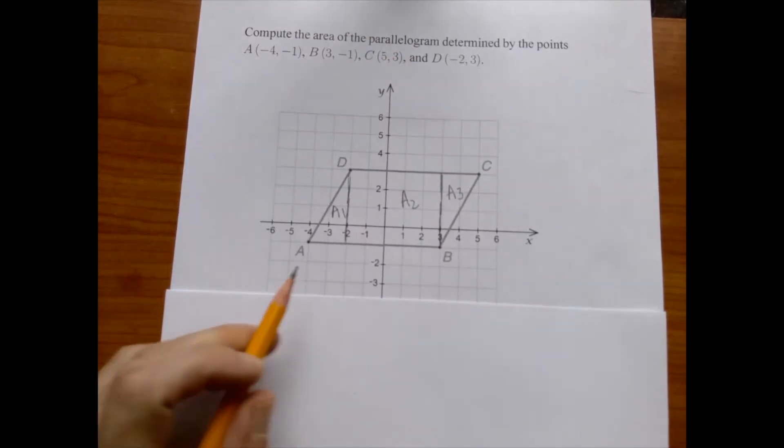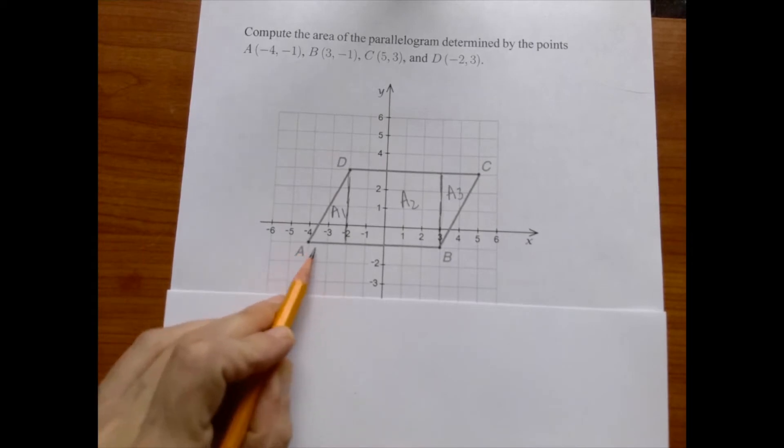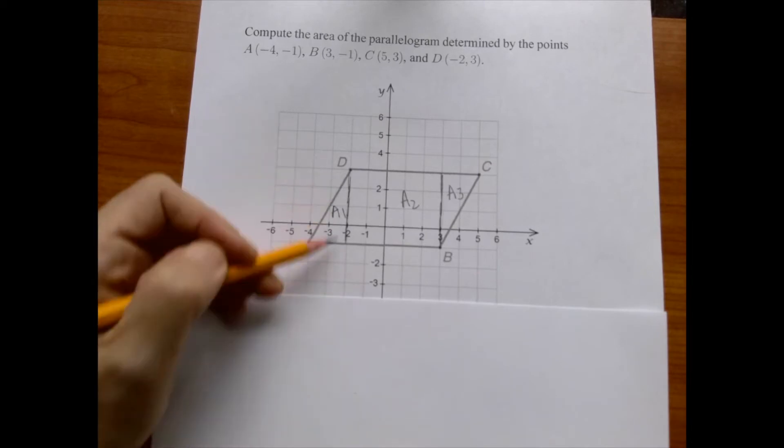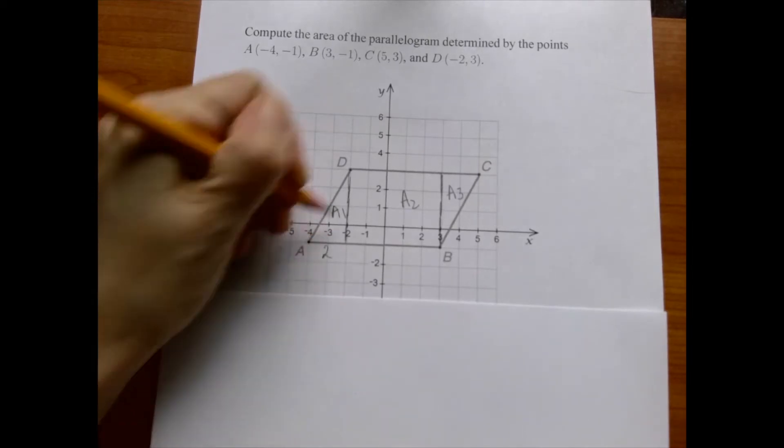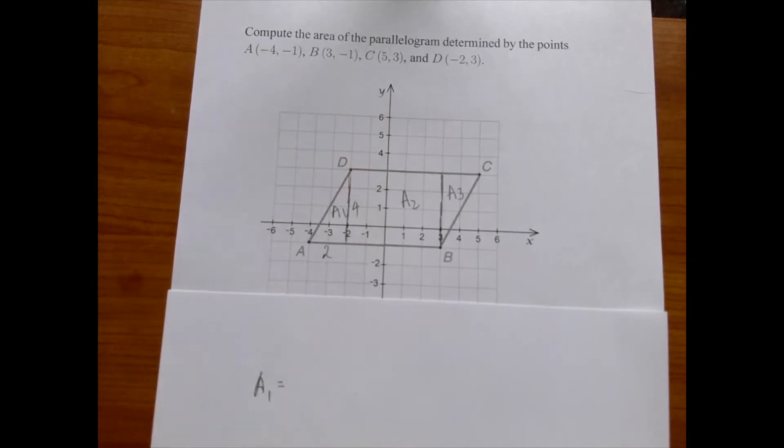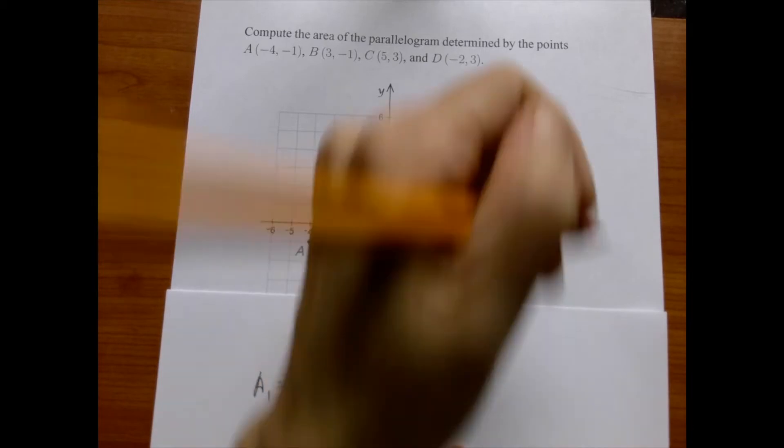One side, we can actually read it from the picture that this side is two units long and this side is four units long. So this is two, this is four. So the area of the first triangle, we're just going to use the one-half base times height.